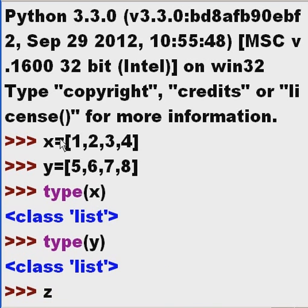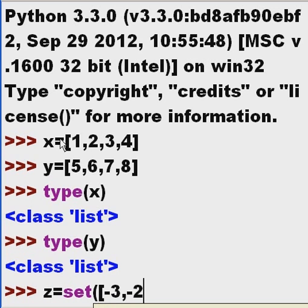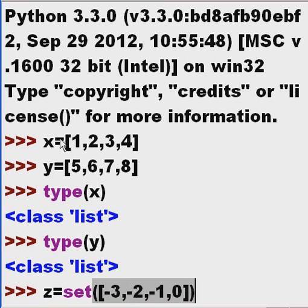Now I'm going to make a set. z equals set, open parentheses, brackets, and then negative 3 comma negative 2 comma negative 1 comma 0. I'm going to close brackets, close parentheses, there we go.